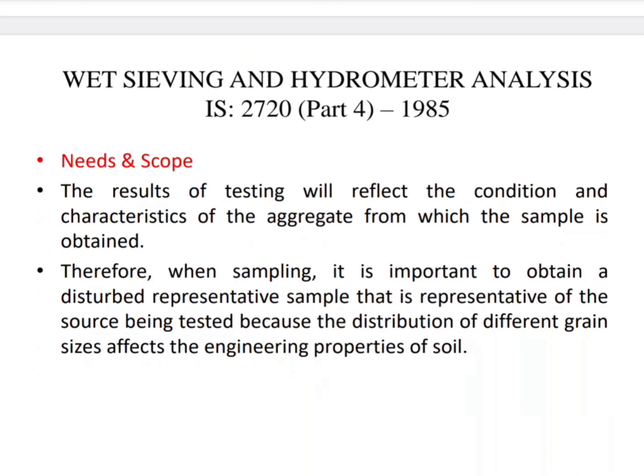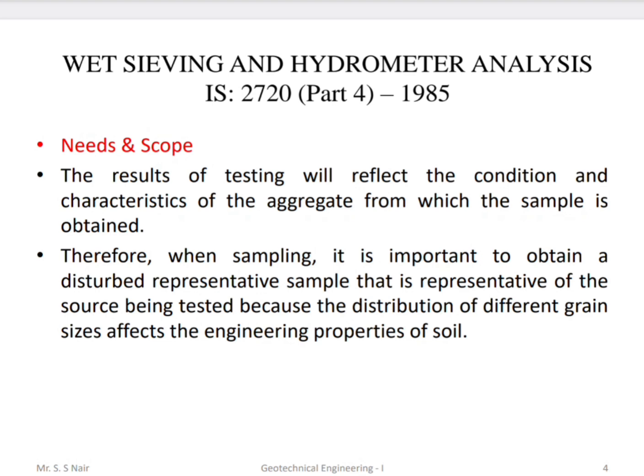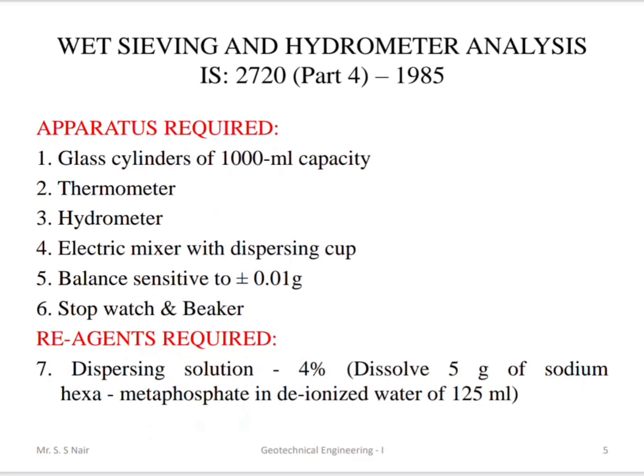The result of testing reflects the condition and characteristics of aggregates from which the sample is obtained. When sampling, it is important to obtain a representative sample of the source being tested, because the distribution of different grain sizes affects the engineering properties of soil. The apparatus required for this test are a glass cylinder, thermometer, hydrometer, electric mixer, weighing balance, stopwatch, and beaker.